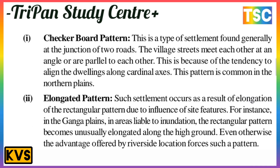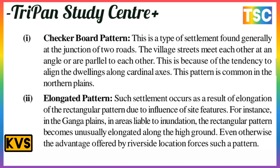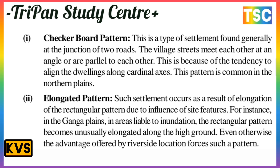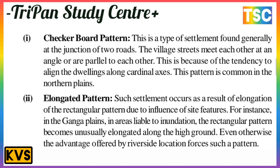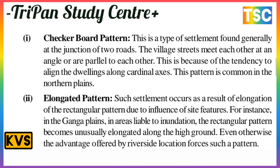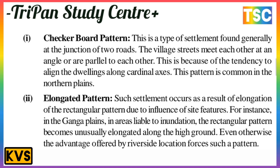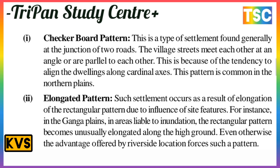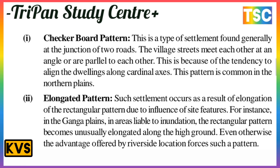The checkerboard pattern: this type of settlement is generally found at the junction of two roads. The bilateral streets meet each other at right angles or are parallel to each other, because of the tendency to build dwellings along a cardinal axis. This pattern is common in the northern plains.